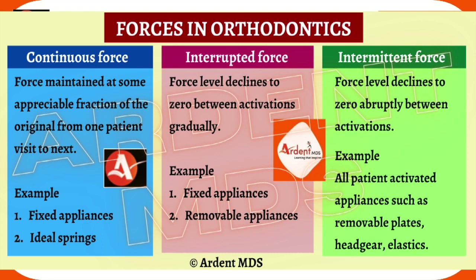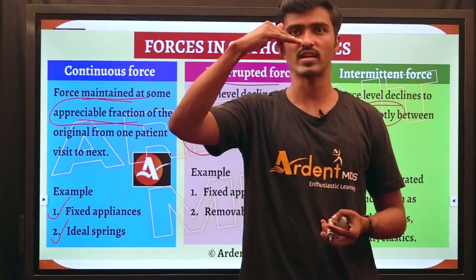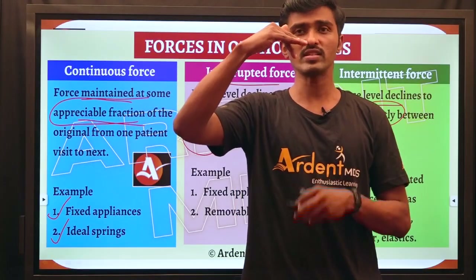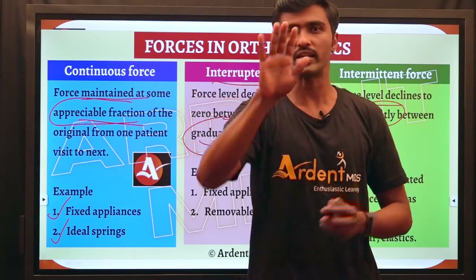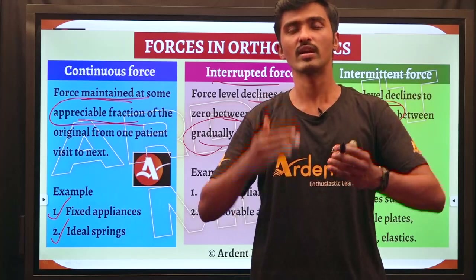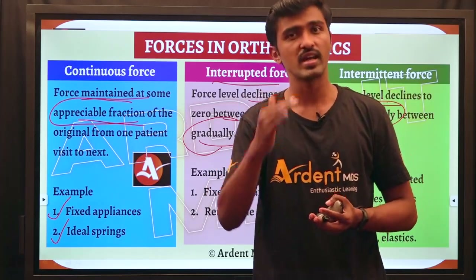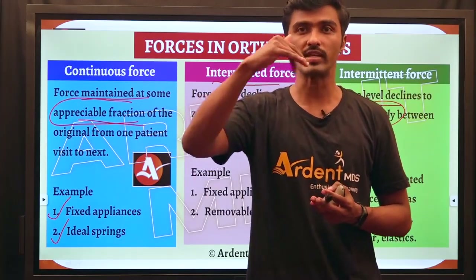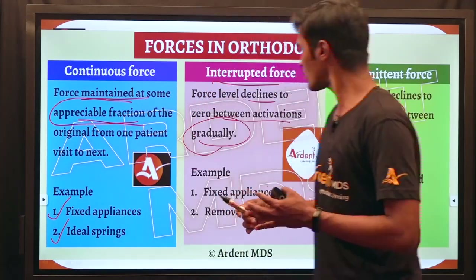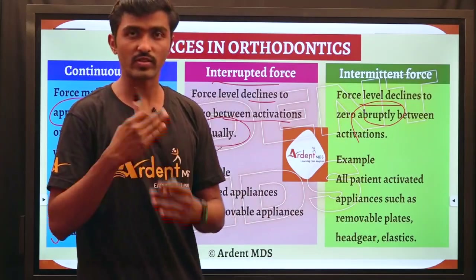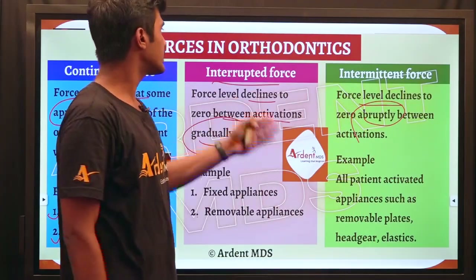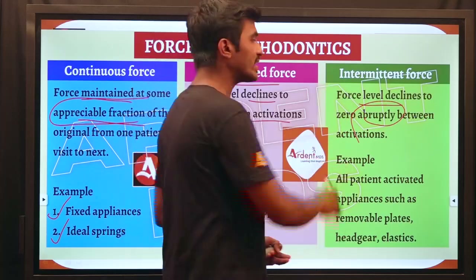Fixed and removable appliances can also demonstrate interrupted force. For example, a Z-spring used for an anterior crossbite is placed on the palatal aspect. When activated, the teeth move labially and the force level gradually drops to zero. The patient then revisits for reactivation. If the force level drops to zero in a gradual manner, it is called interrupted force.